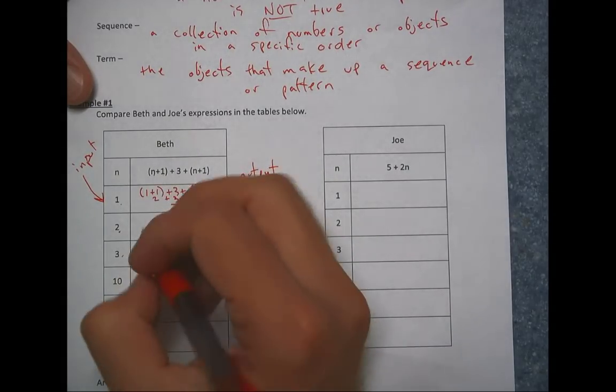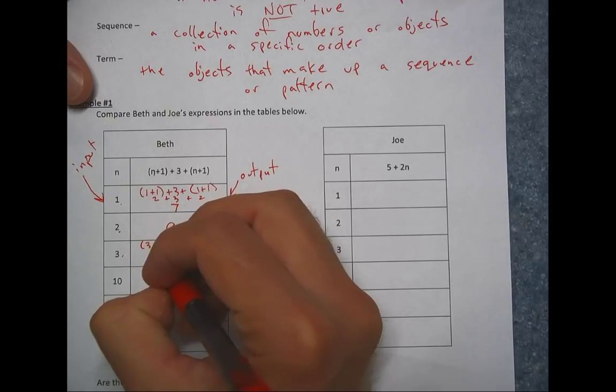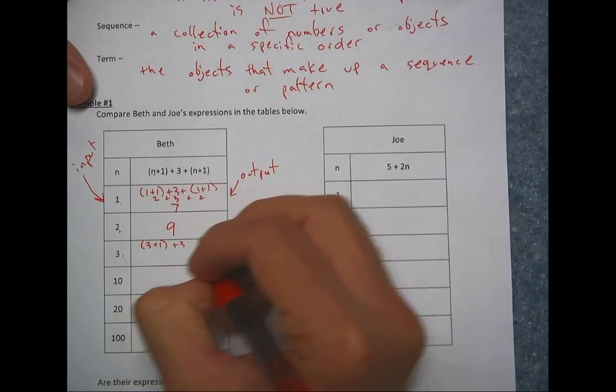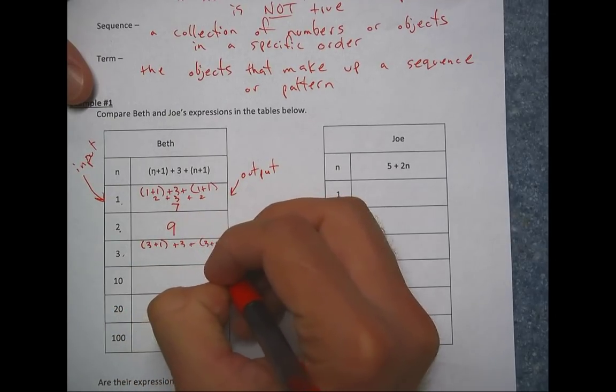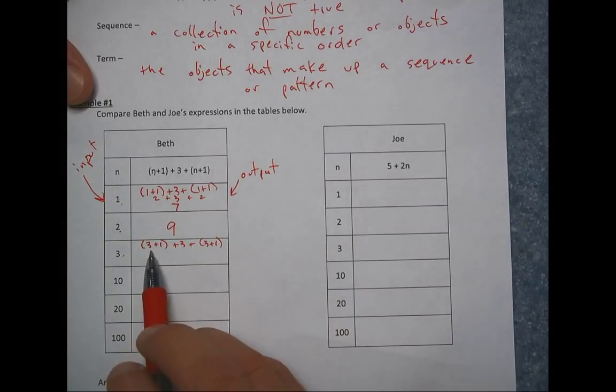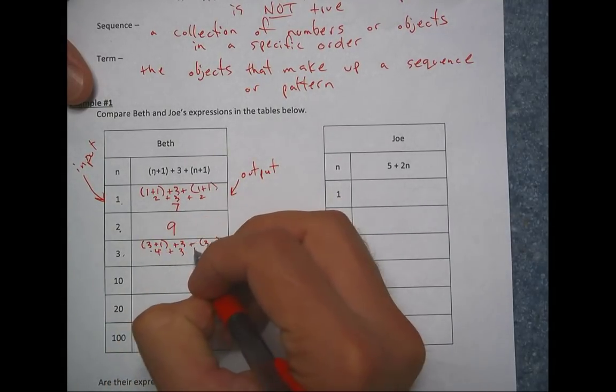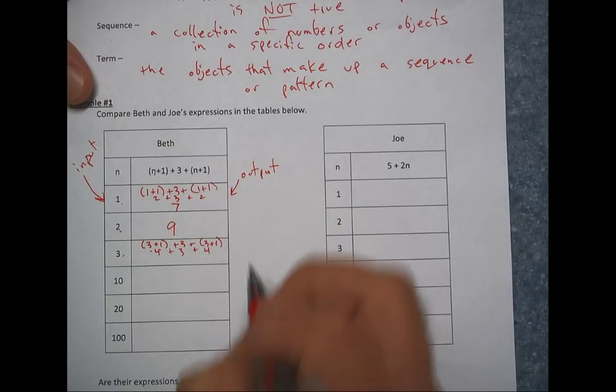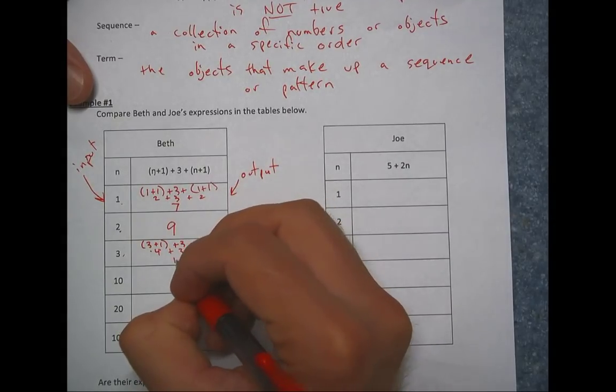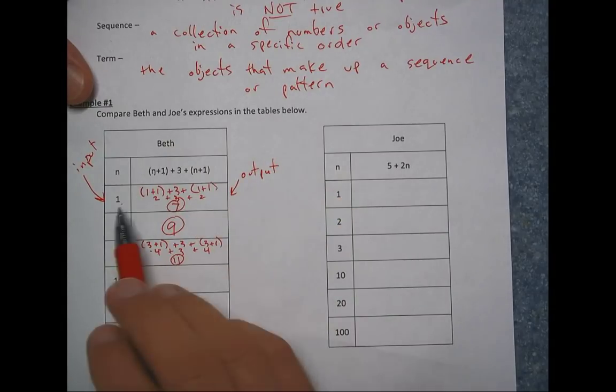We do it for number three, I'm going to write this one out. Three plus one, plus three, plus three plus one. So we got four, plus three is seven. And then in parentheses here, another four. So that is 11. So it's seven, nine, 11. And you start to see a pattern.